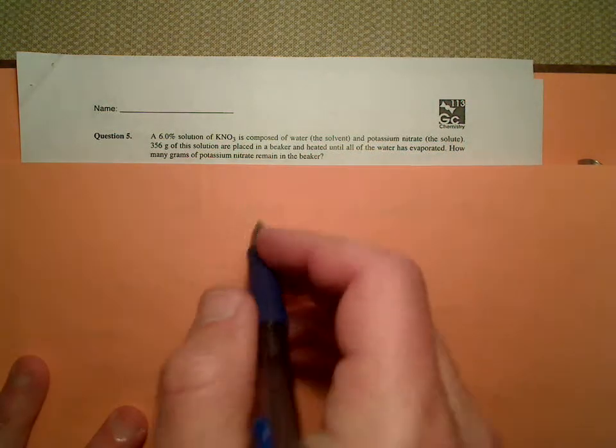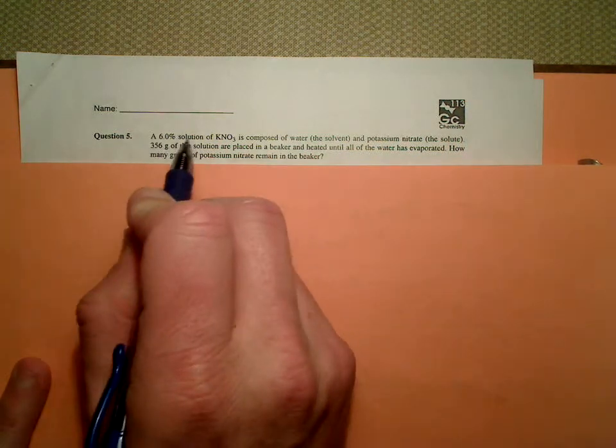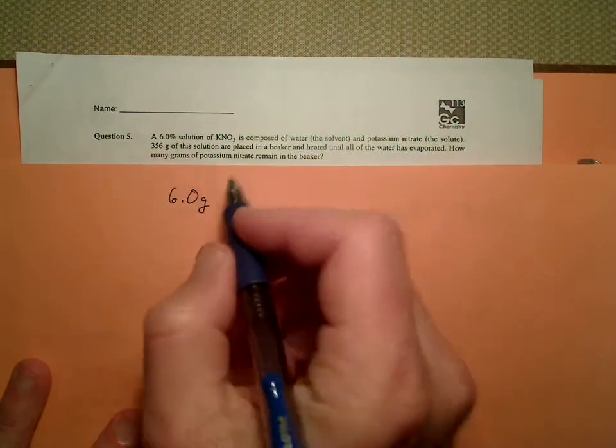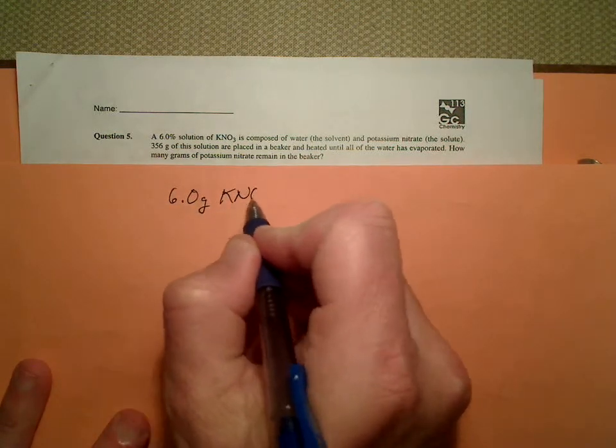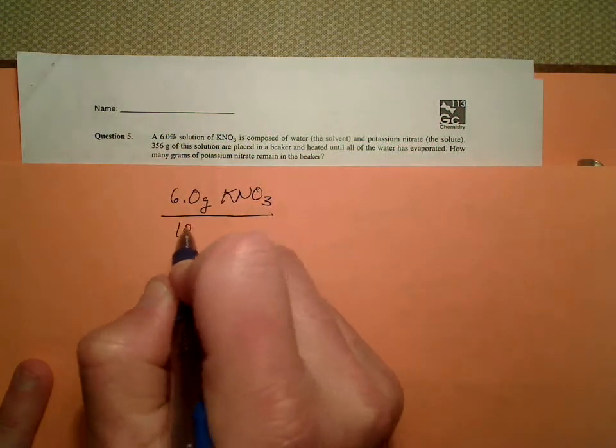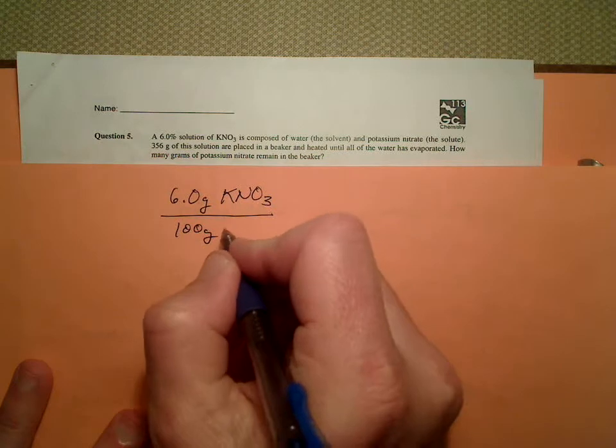So if we look at this, we have this conversion factor here, the 6%. Remember, that's by mass. We can say 6.0 grams of the solute, in this case potassium nitrate, per 100 grams of solution.